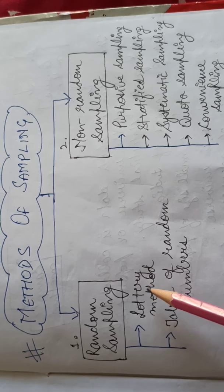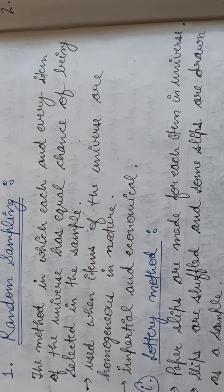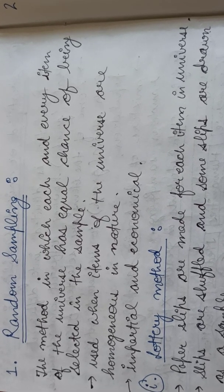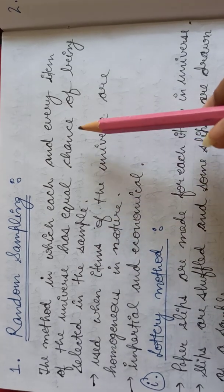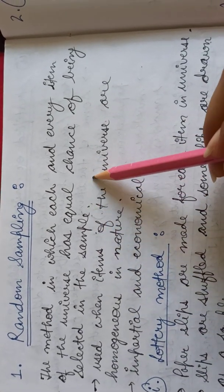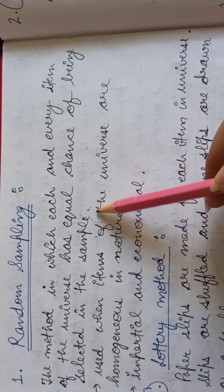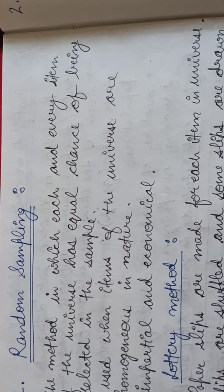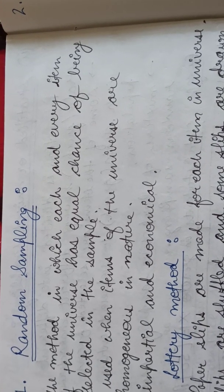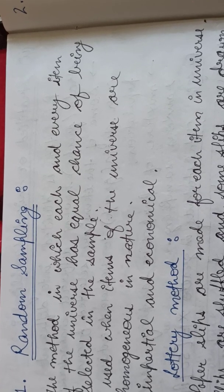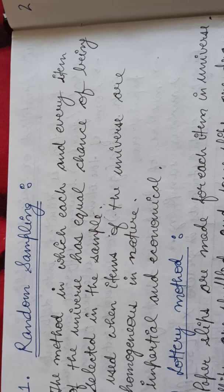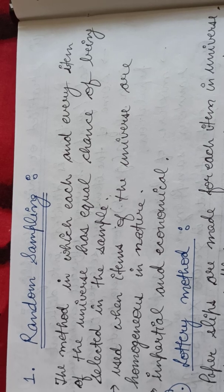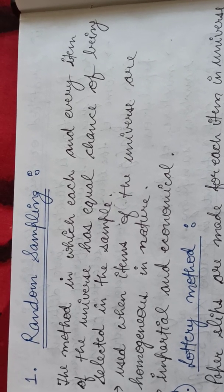We will study each method one by one. The first method of sampling is random sampling. In this form of sampling, it is the method in which each and every item of the universe has an equal chance of being selected in the sample. The probability of being selected for each and every item will be equal, because we will be randomly selecting the sample out of the given population.